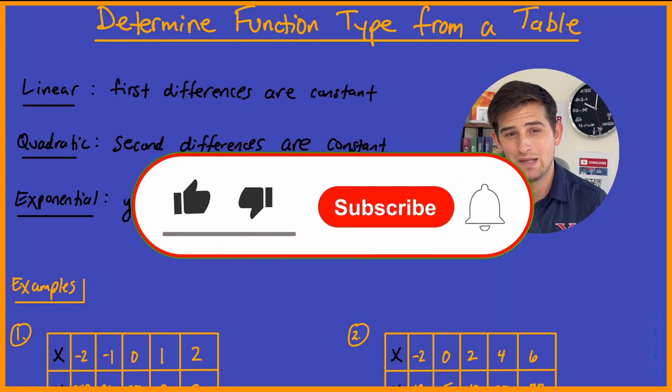In this video, we're going to talk about how we can determine the type of function we're working with based on just a table of values.